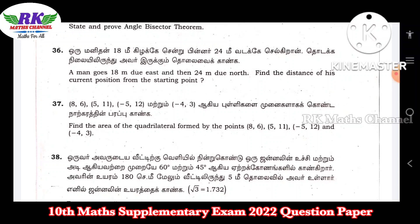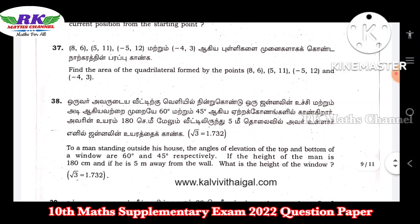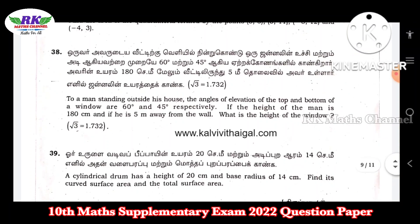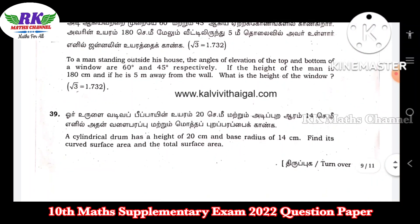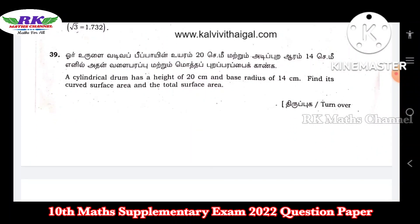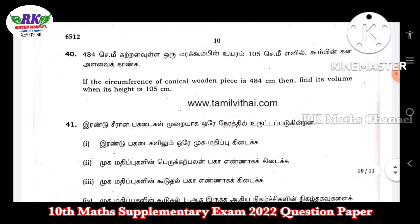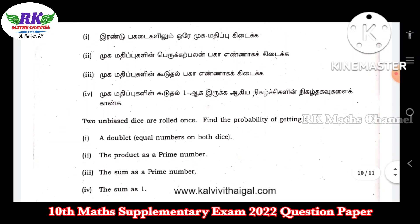You can see the Pythagoras theorem and Thales' theorem. Question number 36: a man goes 18 meters due east and then 24 meters due north — find the distance of his current position from the starting position. This is a Pythagoras theorem problem from the fourth chapter. Question number 37: find the area of the quadrilateral using four vertices. Question number 38: angle of elevation and angle of depression from the main syllabus. One question is on mensuration — cylindrical drum height, radius, curved surface area and total surface area.